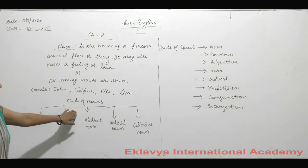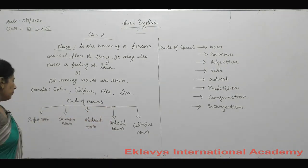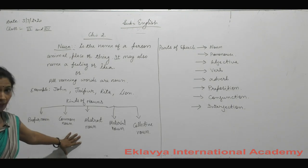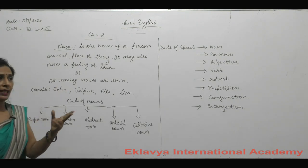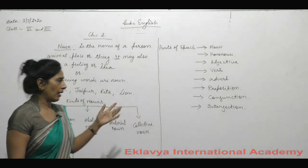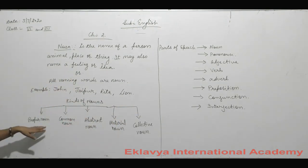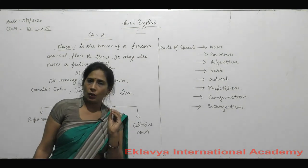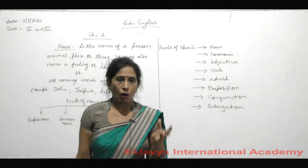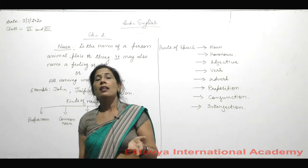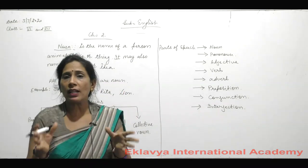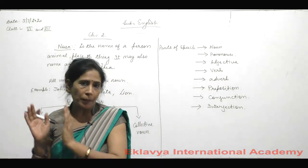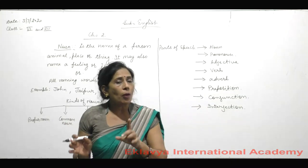Now I am telling you the kinds of noun. There are five kinds of noun given here, but in advanced English we have two more — compound and concrete — which I will tell about later. First, I am telling you about proper noun. Proper nouns are those nouns which have a particular name of any person, animal, or thing — like the name your parents have given you.